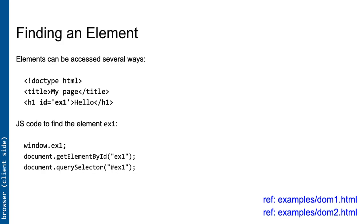Elements have properties which are accessible with dot notation in JavaScript. The main caveat is classList — elements can have multiple classes, which is desirable because you can make things yellow, emphasized, and centered at the same time without defining a class with all of these combined. You can't just overwrite classList with a string, as that would remove all other classes associated with that element, so use the methods within classList — that's a common mistake we see students make.